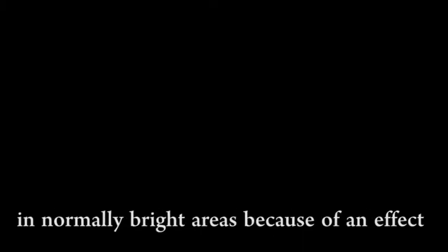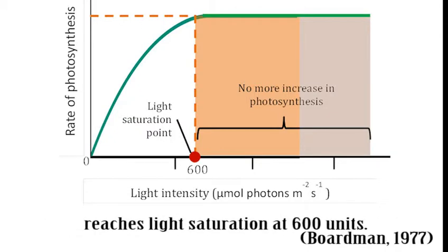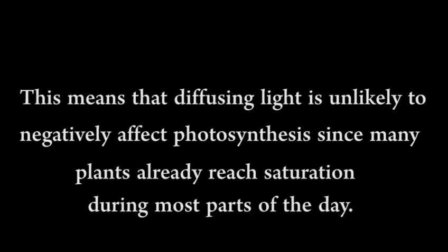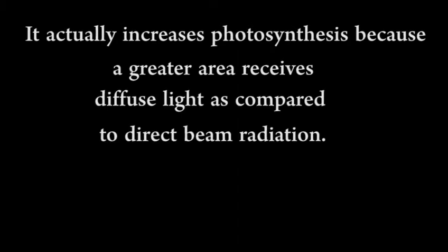This is unlikely to reduce photosynthesis in normally bright areas because of an effect called light saturation — when the rate of photosynthesis does not increase past a certain light intensity. In this illustration, a plant species used to bright light reaches light saturation at 600 units, while direct noon-time radiation is 4,500 units. This means that diffusing light is unlikely to negatively affect photosynthesis, since many plants already reach saturation during most parts of the day. It actually increases photosynthesis because a greater area receives diffused light compared to direct beam radiation.